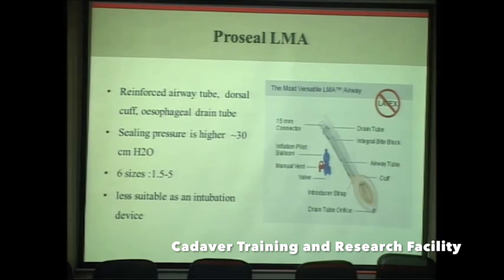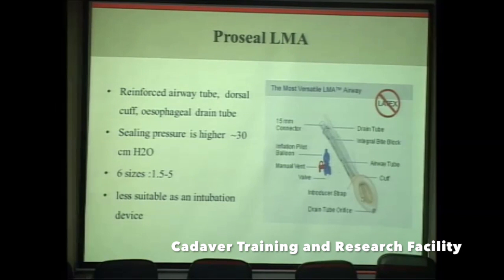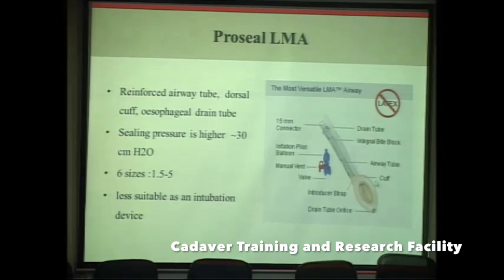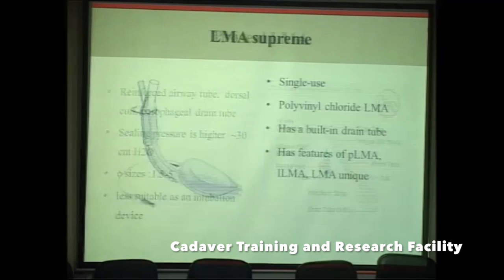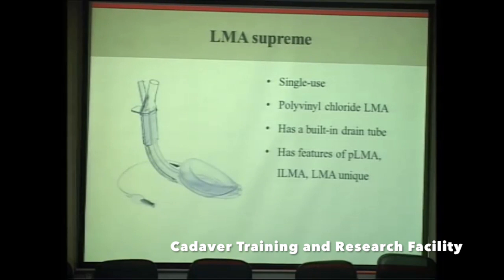The ProSeal LMA is the benchmark for second generation LMAs. It has a reinforced airway tube, an additional dorsal cuff, an esophageal drain tube, a cuff introducer strap, a manual vent, inflation pilot balloon, and an integral bite block. The pharyngeal sealing pressure is higher than the classic LMA at approximately 30 cmH₂O. It comes in six sizes from 1.5 to 5. The ProSeal LMA is less suitable as an intubation device.